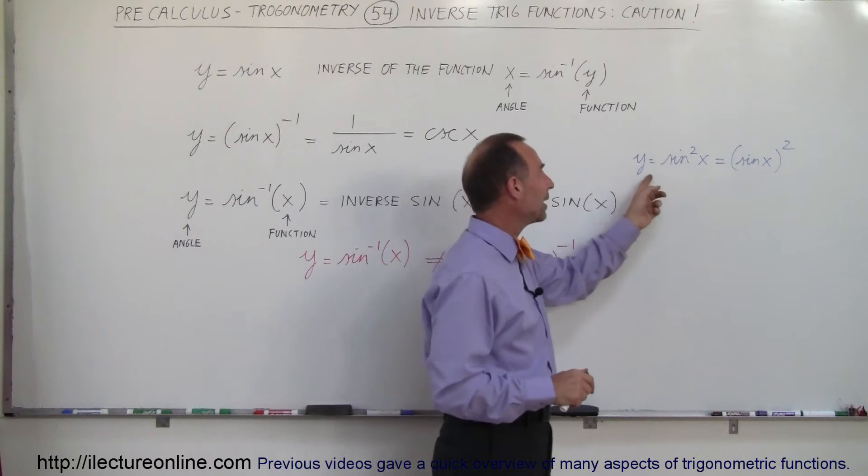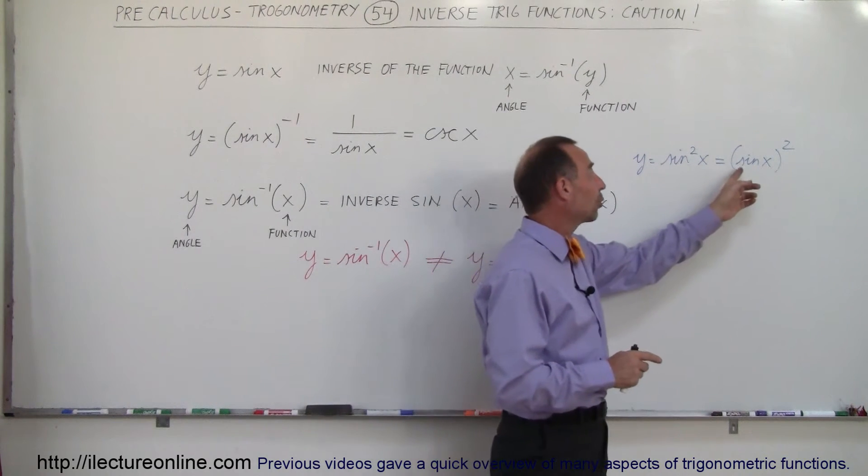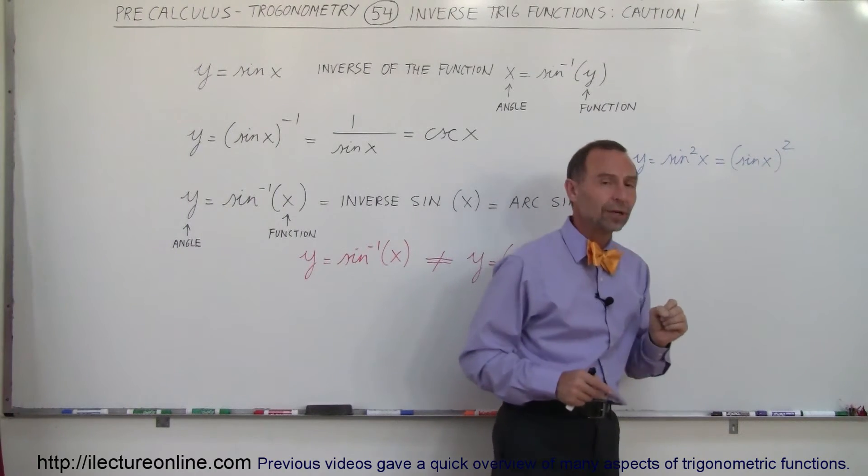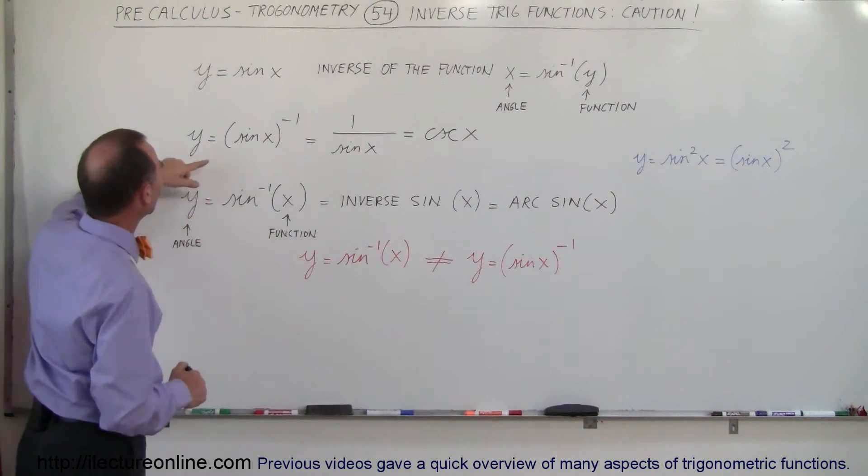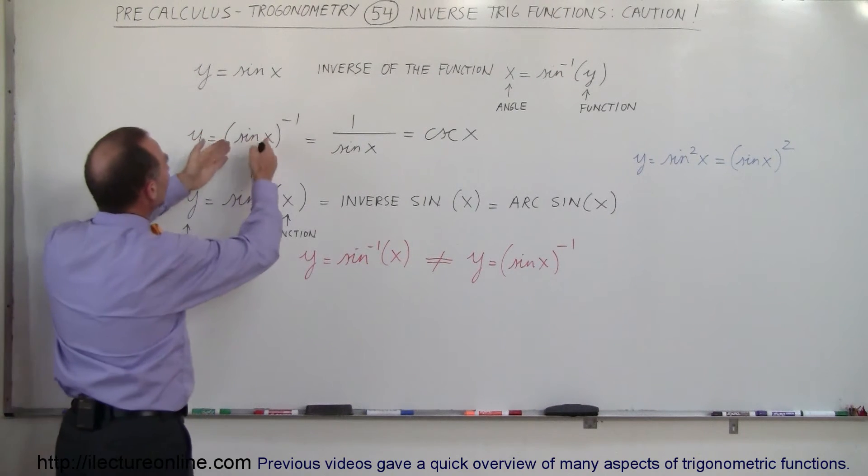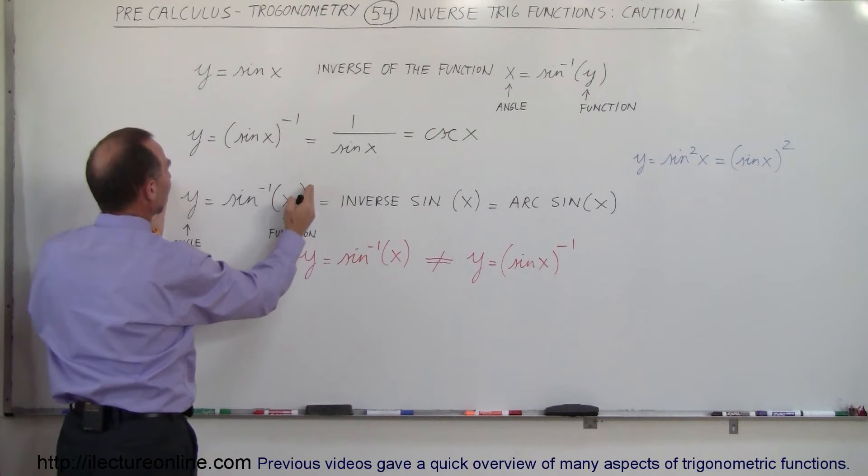Sometimes we can write y equals sine squared of x which means exactly the same as the quantity sine of x quantity squared. Now what you can say is if you write it like this, for example y equals the quantity sine of x to the minus 1, is not the same as writing it like this.